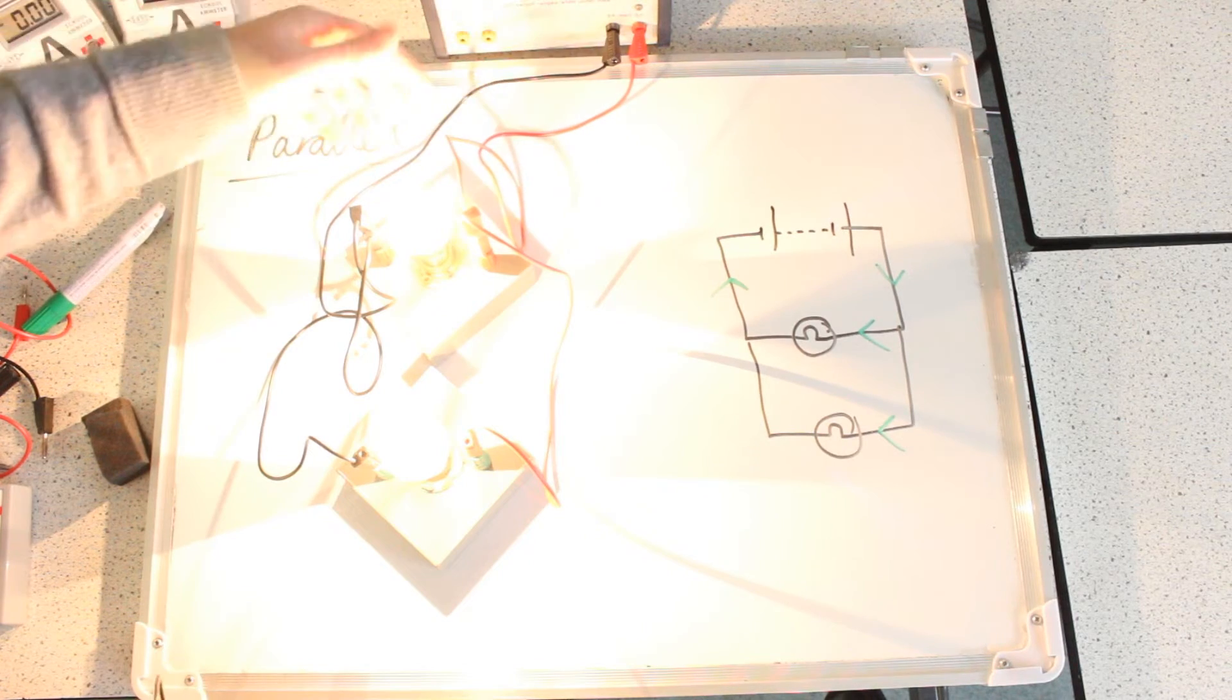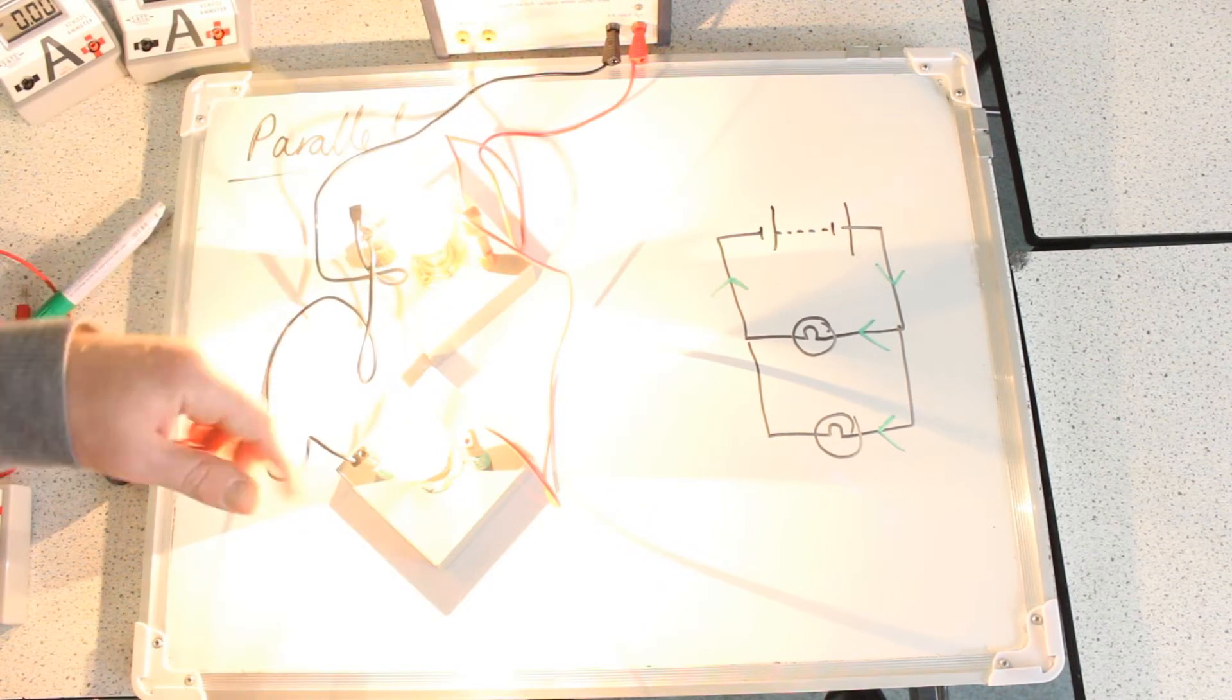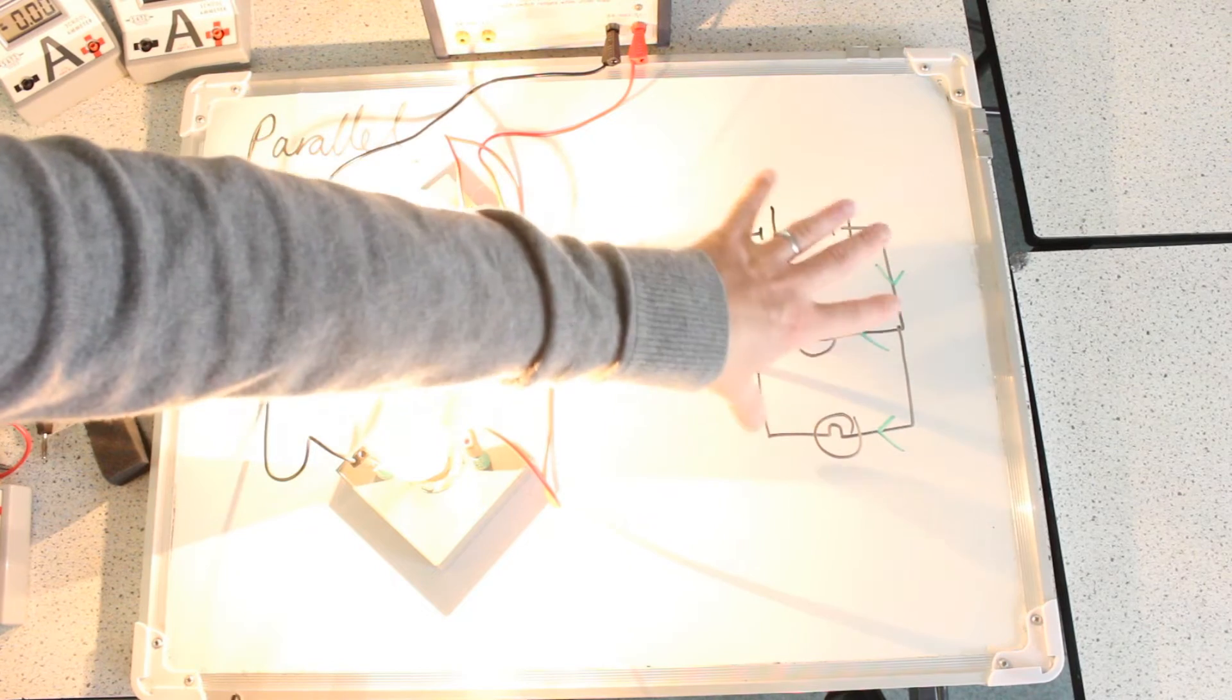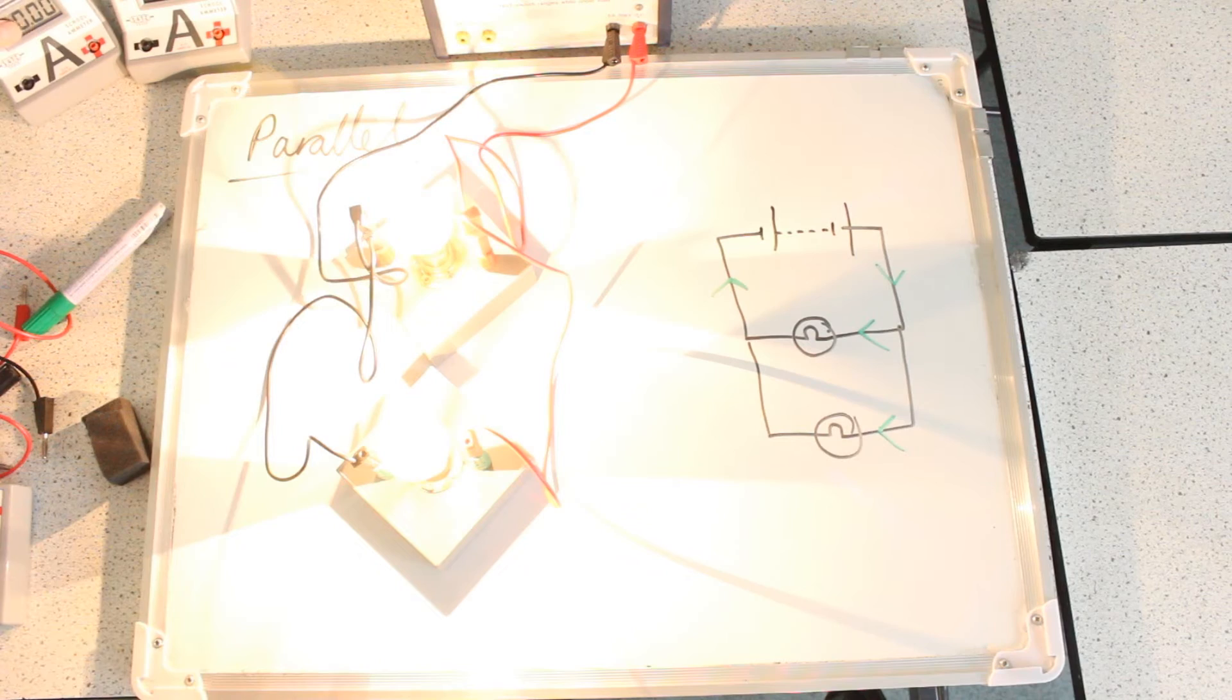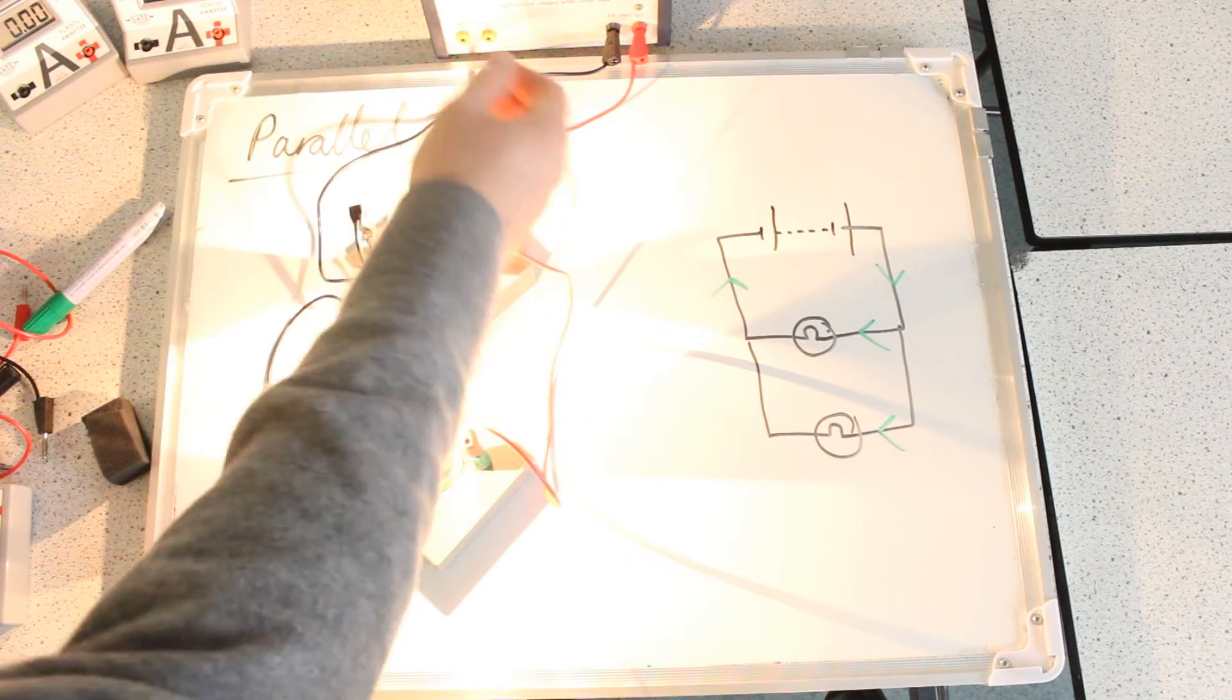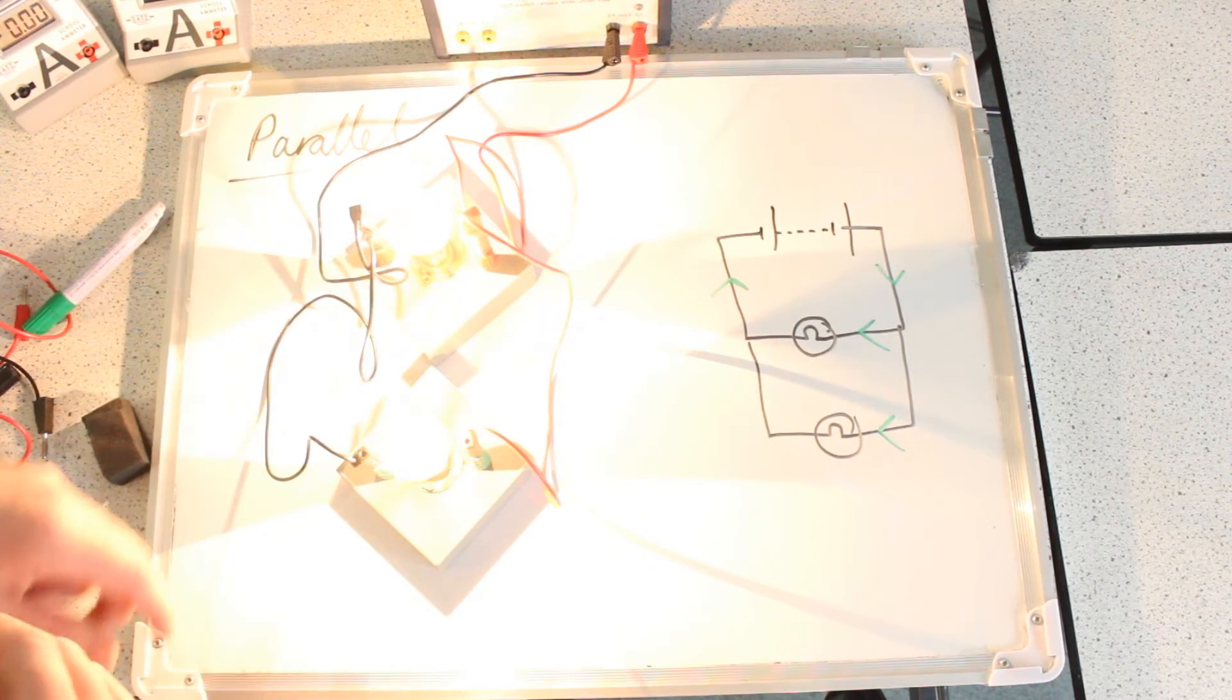And actually these two wires here, all the current that goes through to this bulb is travelling through these two wires here as well. So once again, from what you already know, then predict how you're expecting those currents to relate to each other.